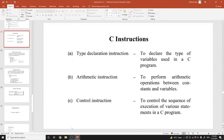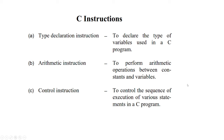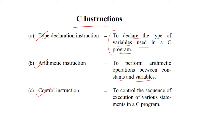Hello friends, today we will learn about C instructions. There are three types of C instructions: first is type declaration instructions, second is arithmetic instructions, and third is control instructions. Type declaration instructions are used to declare the type of variables used in a C program. Arithmetic instructions are used to perform arithmetic operations between constants and variables. Control instructions are used to control the sequence of execution of various statements in a C program.